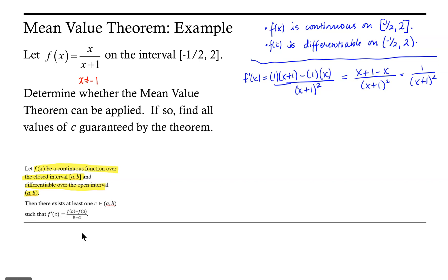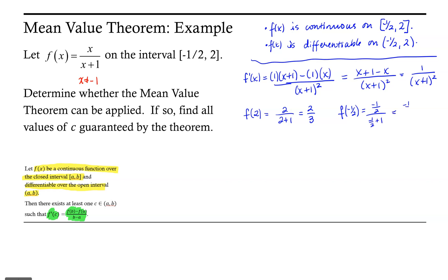We have the derivative, so we can work with the left side of the equation, but we also need to find the ratio on the right side. Let's find f of b and f of a. f of b — the right-hand endpoint — is 2 over 2 plus 1, which gives us 2 thirds. And f of the left-hand endpoint: f of negative one-half gives us negative one-half over negative one-half plus 1, which is negative one-half over one-half. The one-halves divide out, leaving us with negative 1. So f at negative one-half equals negative 1.